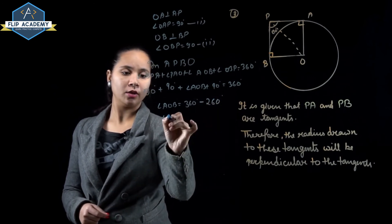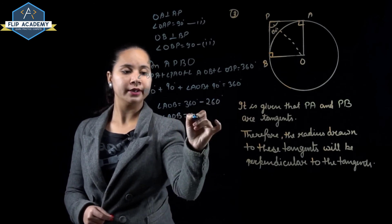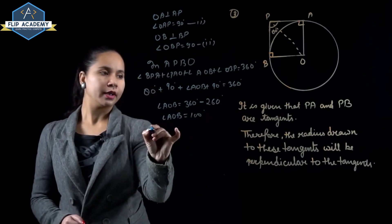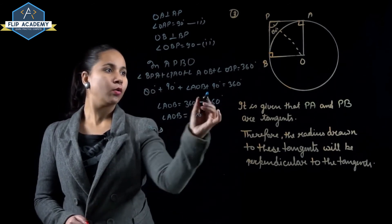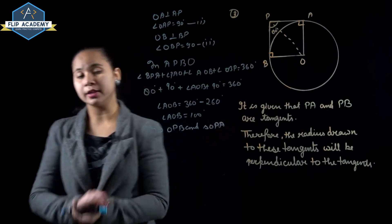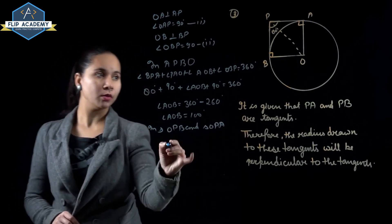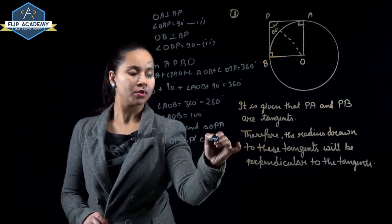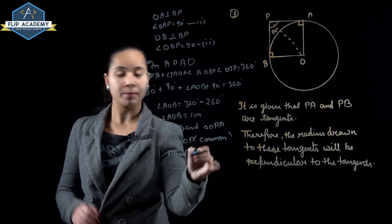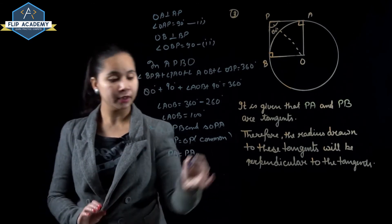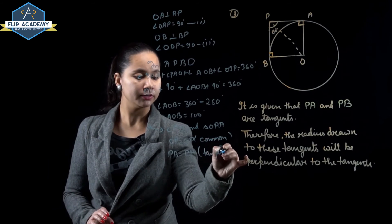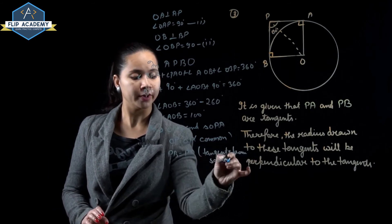So angle AOB is equal to 100 degrees. Now in triangles OPB and OPA, OP equals OP (common side), and PB equals PA because tangents from the same external point are equal.